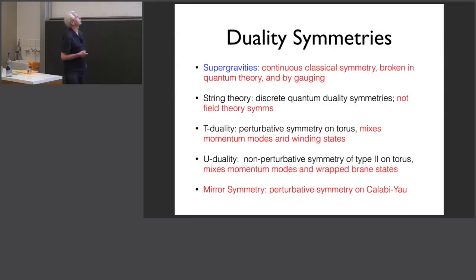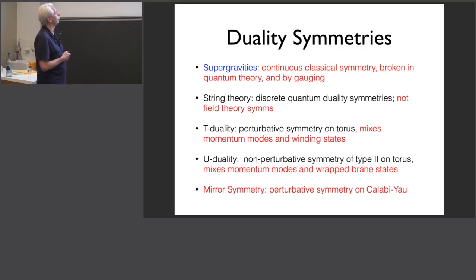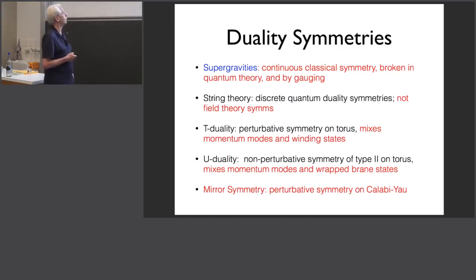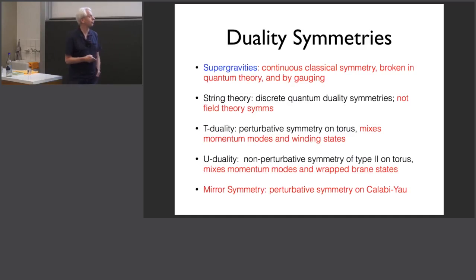So a quick reminder about duality symmetries — it'll be familiar to all of you, just to explain the context. Supergravities of course have got continuous classical symmetries, E7 for four-dimensional N=8 for example, which are broken in the quantum theory to a discrete group or broken by gauging. String theory has discrete quantum duality symmetries as in quantised supergravity, and often these duality symmetries do not correspond to field theory symmetries. The three kinds of symmetries of interest today are T-duality, which is a perturbative symmetry on the torus, U-duality, and in particular mirror symmetry, which is a perturbative symmetry of string theory on Calabi-Yau spaces.